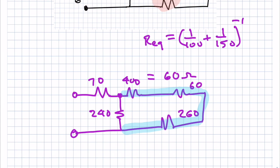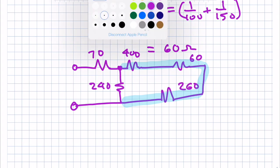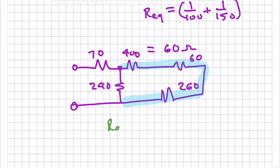So these three are in series, and so I can get the equivalent resistance of those three by just adding them up. 400 plus 60 plus 260. Okay, so I get that to be 720 ohms.